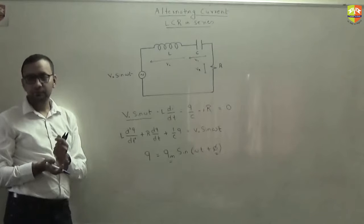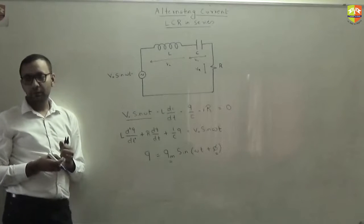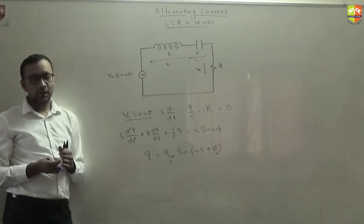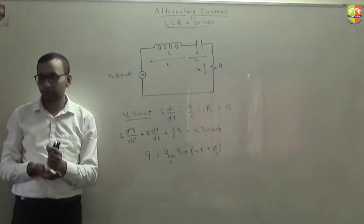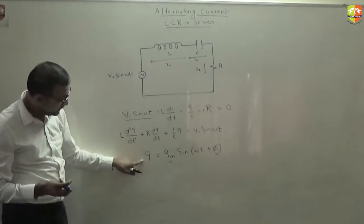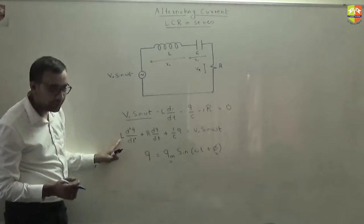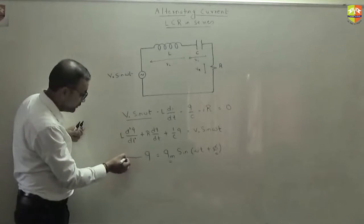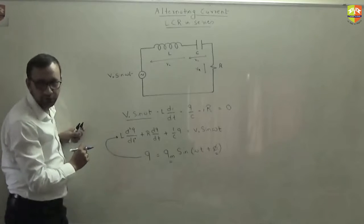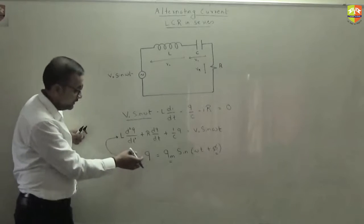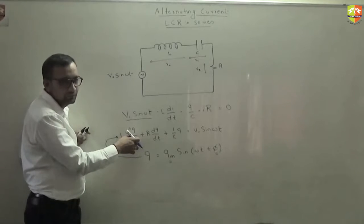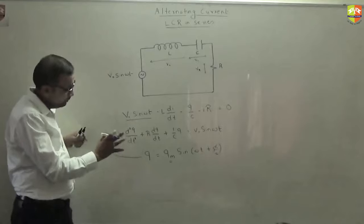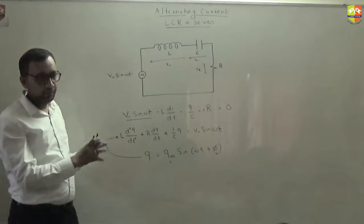How will you find out the value of Q_M and phi? Is there a way to find out? If this is a solution of this differential equation, then you can substitute this value here. It should satisfy this equation, right? So put it here and try to rearrange the term and get it properly.